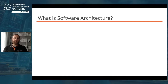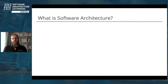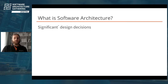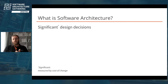A bit more concrete is a definition by Eoin Woods. He says: software architecture is the set of design decisions which, if made incorrectly, may cause your project to be cancelled. It's about risk — the decisions that are risky. The important stuff is usually money, so it's about the significant design decisions, and significant is measured by cost of change.